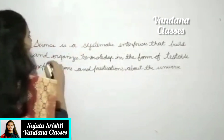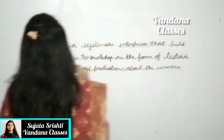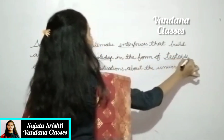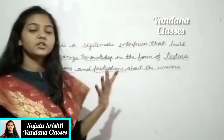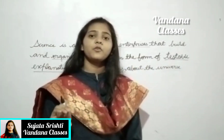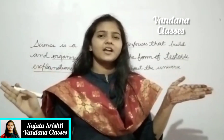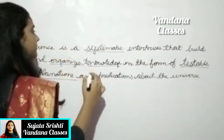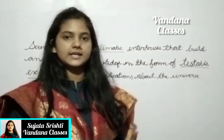But do you know what is science? Science is a systematic enterprise that builds and organizes knowledge in the form of testable explanations and predictions of the universe. In simple words, you can say science is a systematic knowledge of everything around us. Systematic means in a proper order or sequence.